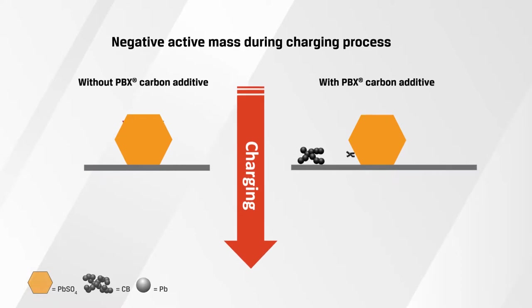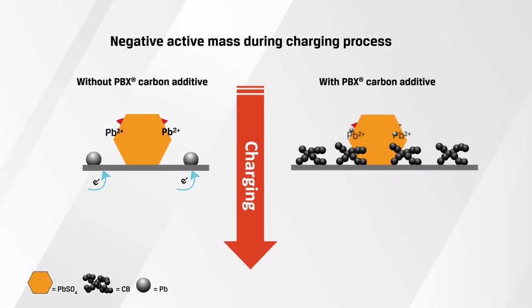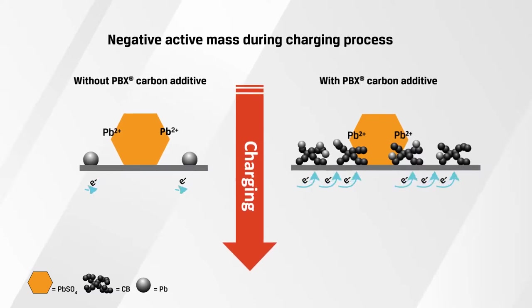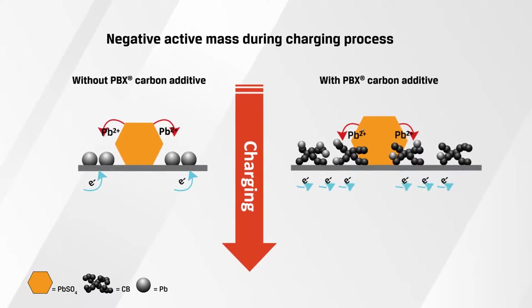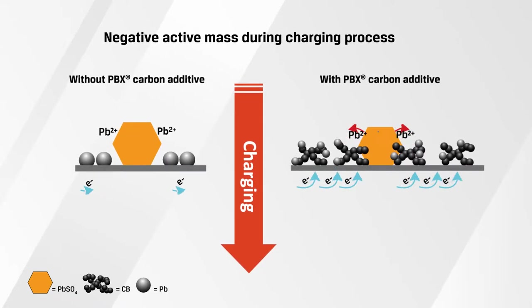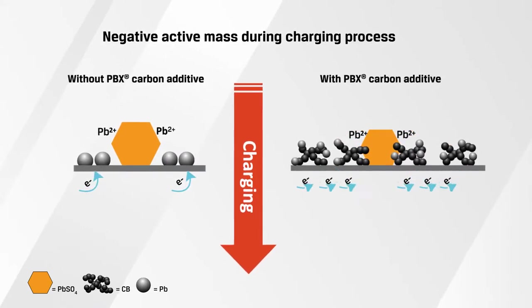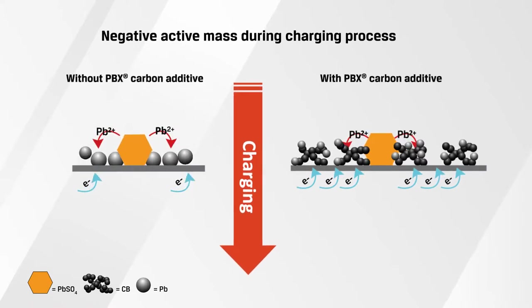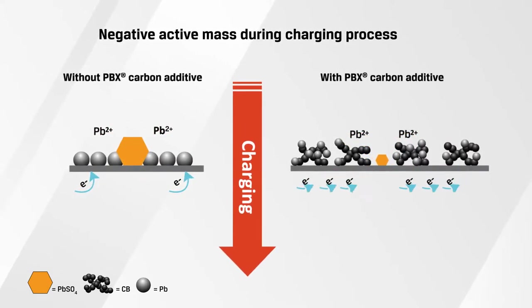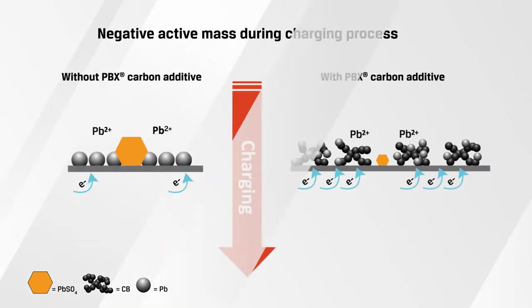The incorporation of carbon black in the negative active mass of a lead acid battery has multiple effects on performance. First, carbon itself improves dynamic charge acceptance by acting as a supercapacitor, accepting charge by double layer effect. In parallel, carbon assists the faradaic electrochemical reactions by extending the conducting surface area in the electrode where lead can be deposited during high rate charge and discharge cycles.